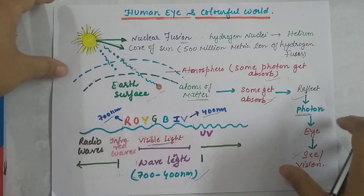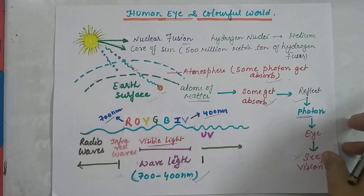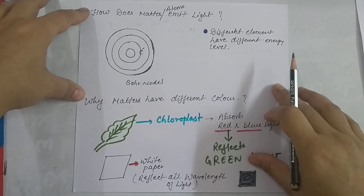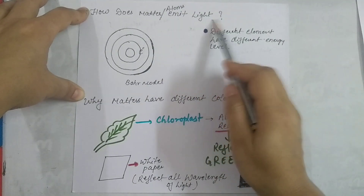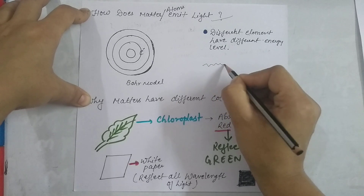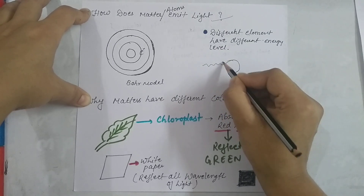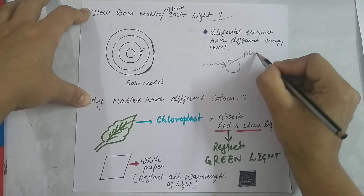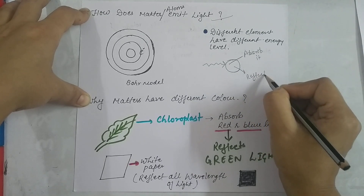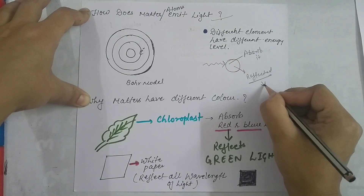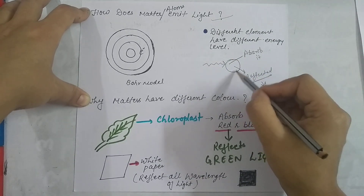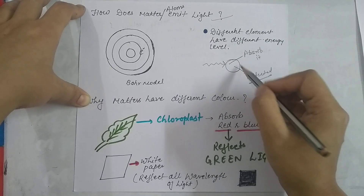Now we are going to look at two more very important questions. The first is: how does matter or an atom emit light? We already discussed that whatever photons we receive, the atom of the matter absorbs them, some get reflected, and this reflected light we are able to see. So what happens inside the atom — how does an atom emit light?